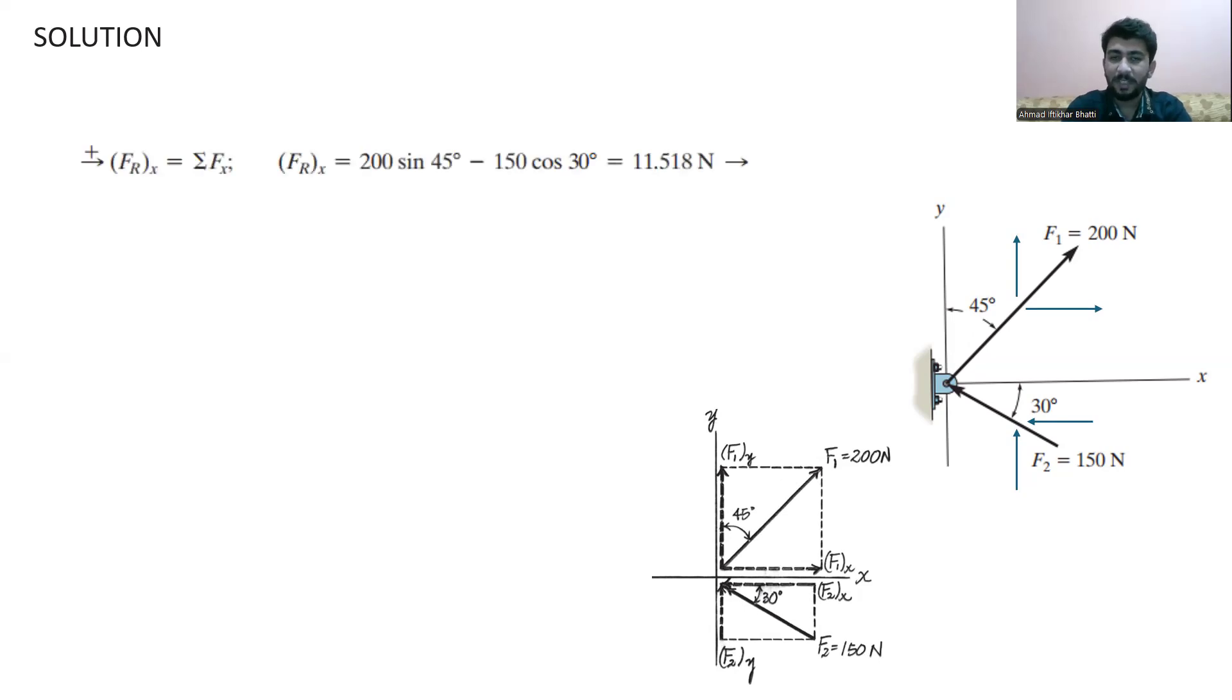So first, if we take the forces in the x-direction, we get 200 Newton sine 45 degrees, and we get negative 150 Newton cosine 30 degrees. Because this force is moving in the negative x-direction, we get 11.518 Newton.